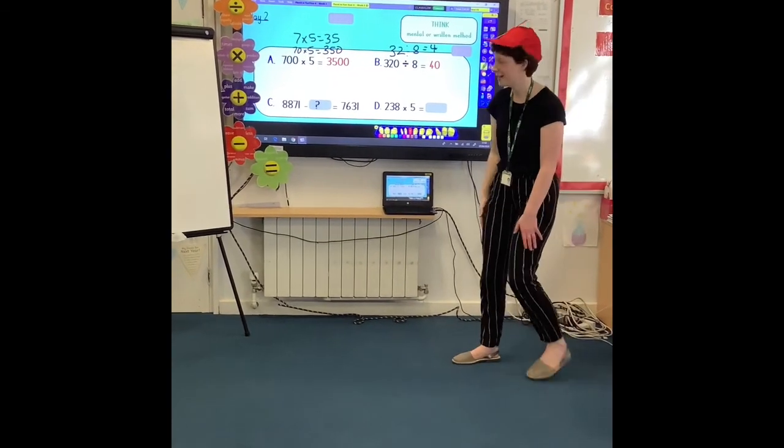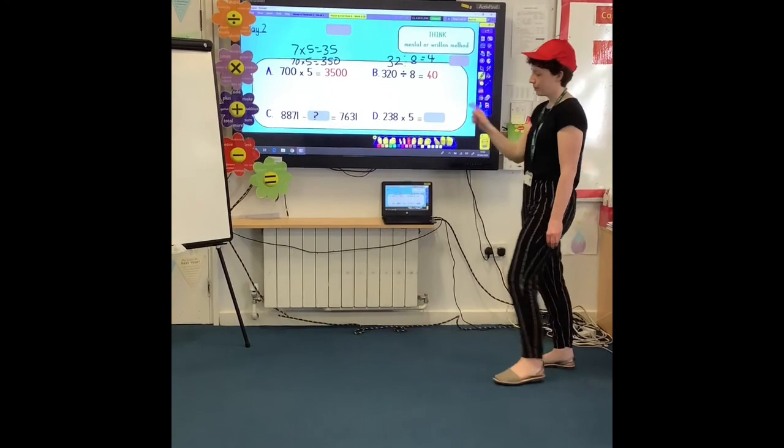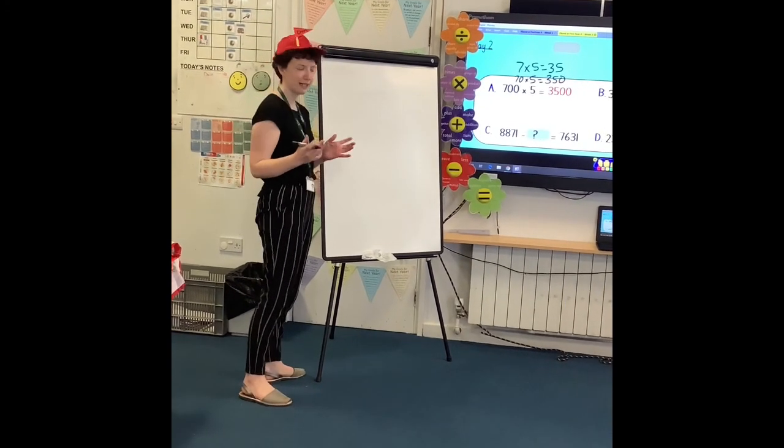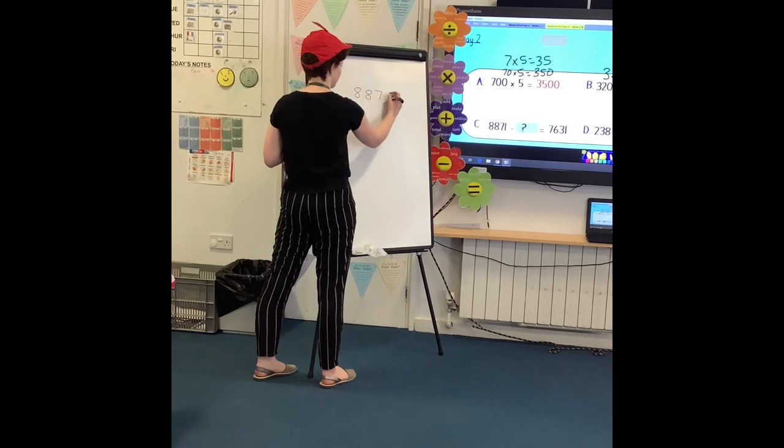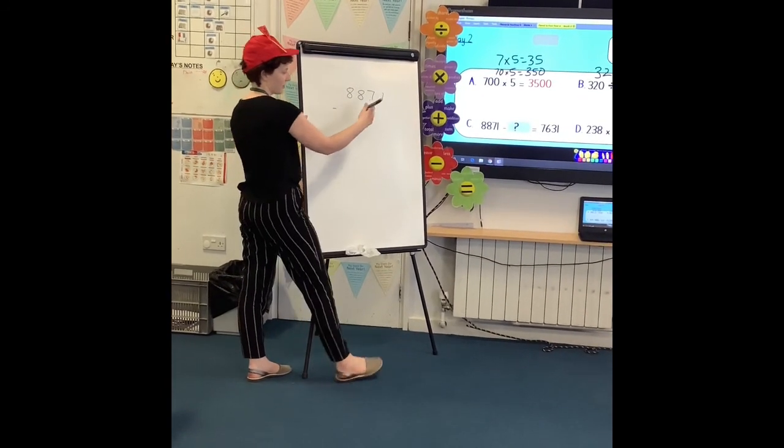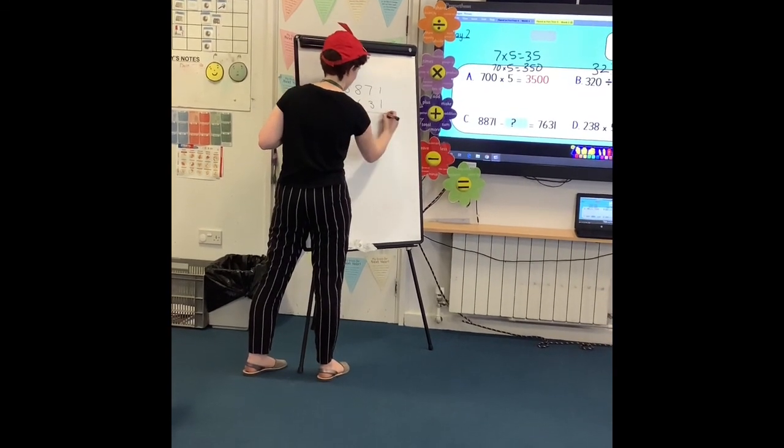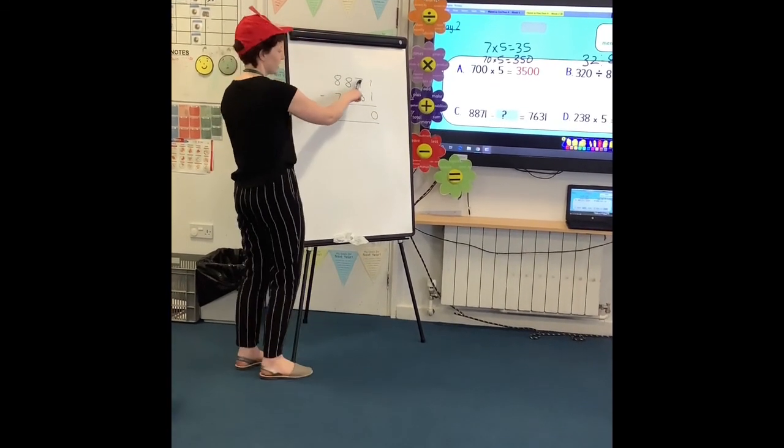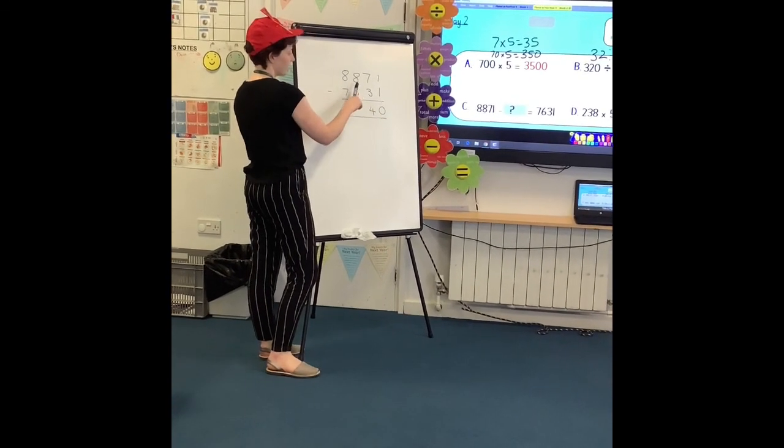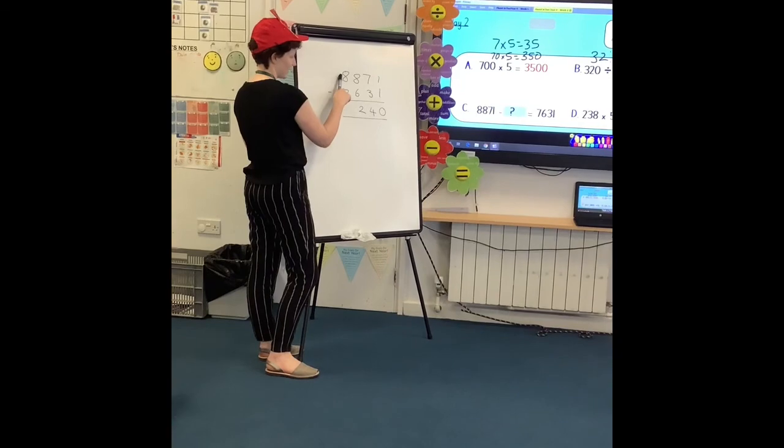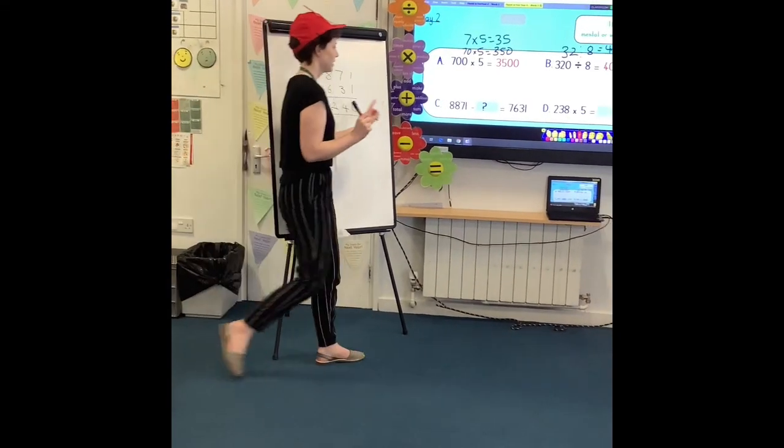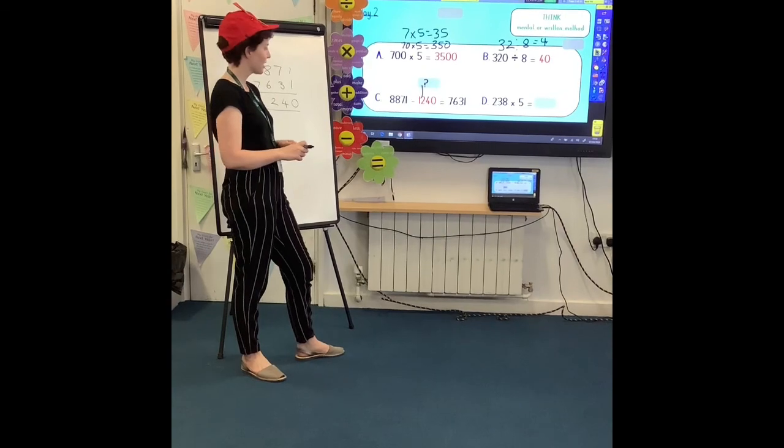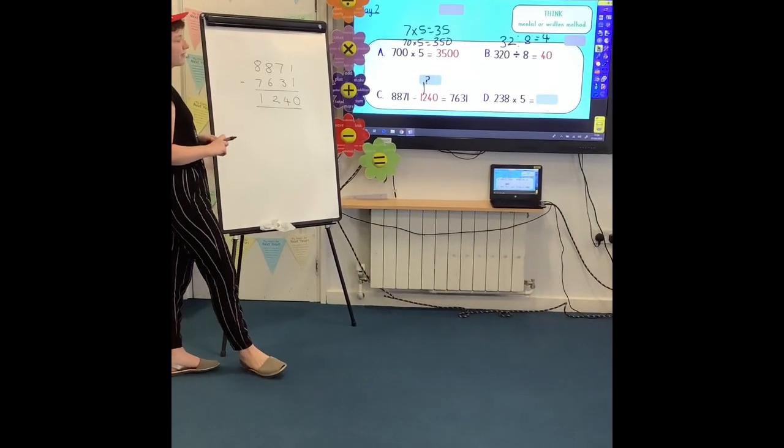C, that one I would not tackle in my head. So I am going to do a written method for that one. Again, we have got a missing number calculation like we had yesterday. So we are going to have to reorder it slightly. So I am going to have 8,871 subtract, and I am going to take away 7,631. So I have got one take away one is zero ones. Then I have got seven tens take away three tens is four tens. Eight hundreds take away six hundreds is two hundreds and eight thousand take away seven thousand is one thousand. So I know that 8,871 subtract 1,240 is equal to 7,631.